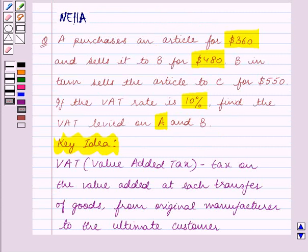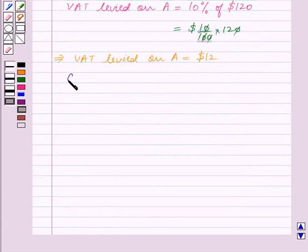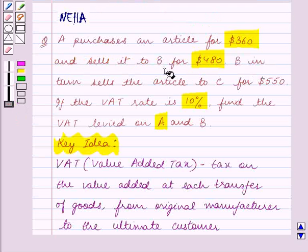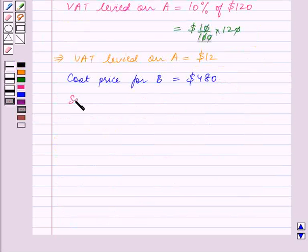Since it is given that A sells the article to B for $480, the cost price for B equals $480. Also, it is given that B in turn sells the article to C for $550, so selling price for B equals $550.